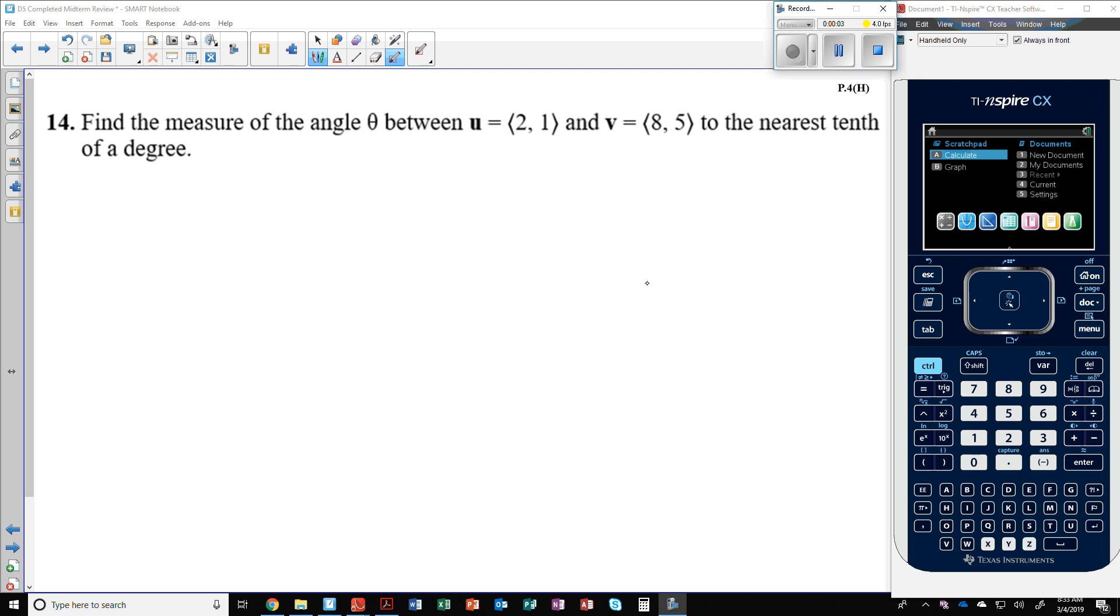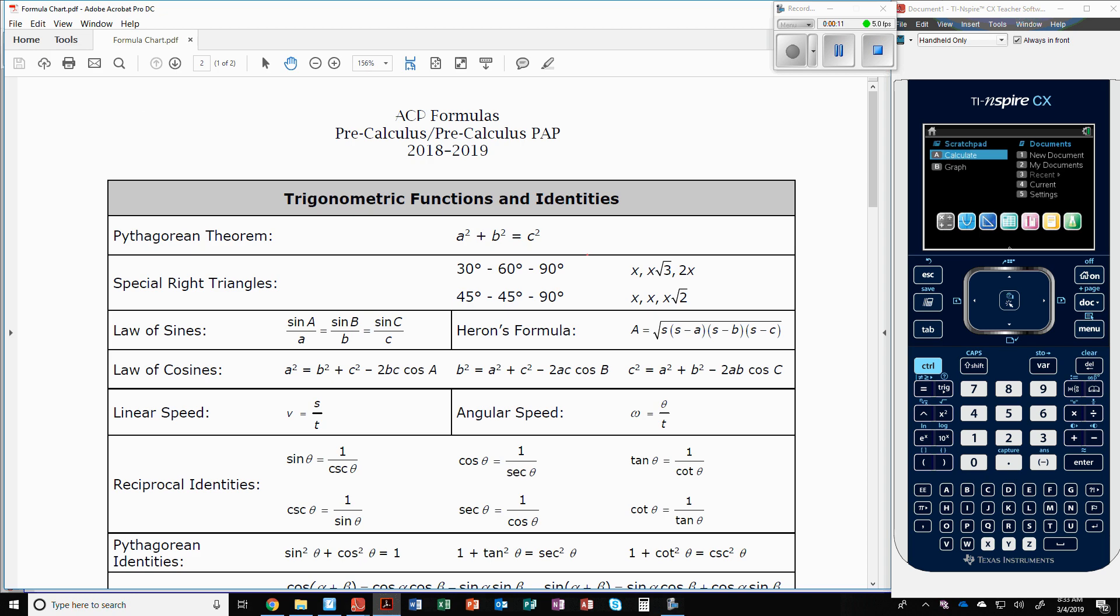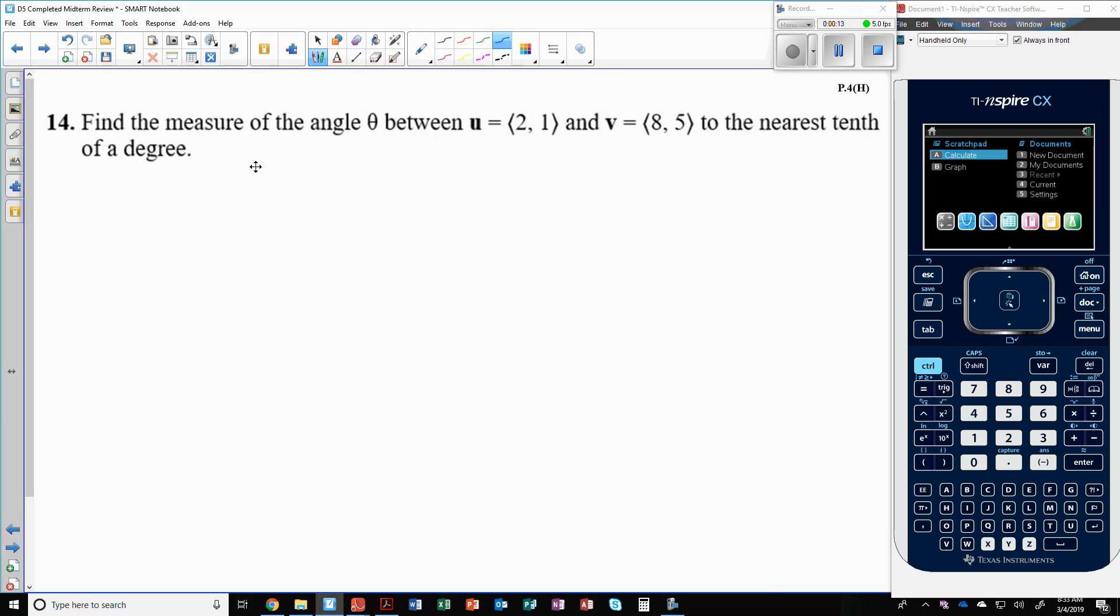Number 14, find the measure of the angle between u and v to the nearest tenth of a degree. Now we had a formula for this, and unfortunately it's not on the formula chart, so if you look on there you won't find it. It says that cosine theta is equal to u dot v divided by the magnitude of u times the magnitude of v.